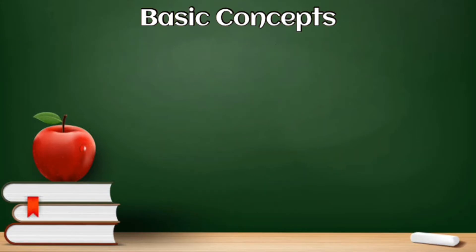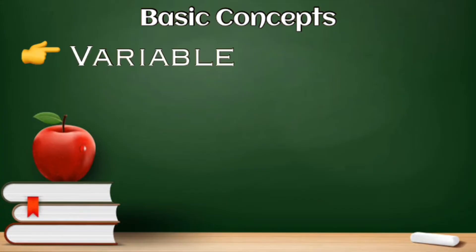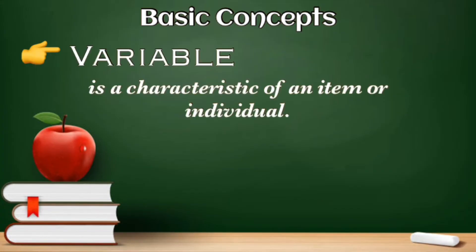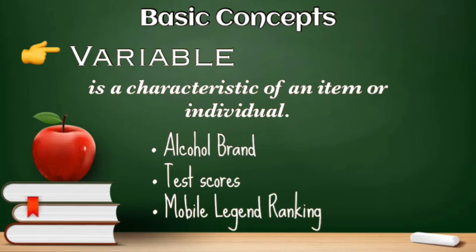Next is variable. A variable is the characteristic of an item or individual. From the word itself, variables can assume different values — for example, alcohol brand, test score, or Mobile Legends ranking. If the description for the variable is too long, we can use symbols like letters.